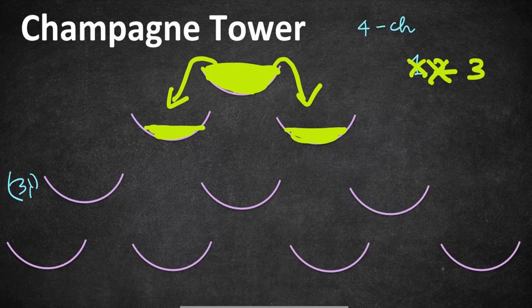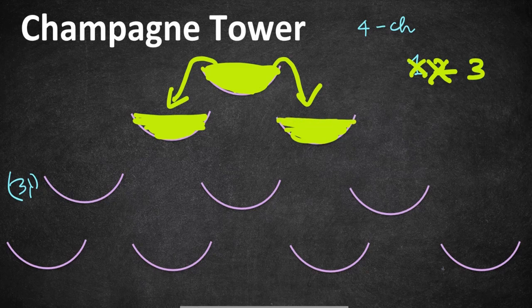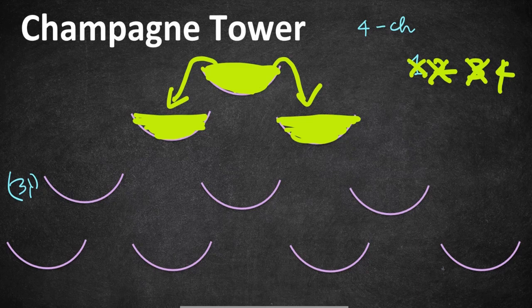Now let's pour glass number three into the top glass. The second row glasses are already half-filled. As usual, glass three is also equally divided to the left side and right side. After finishing glass three, the remaining 0.5 fills the left side and 0.5 fills the right side, meaning after three glasses we have three complete glasses filled with champagne. Now it's time to pour the fourth and final glass.